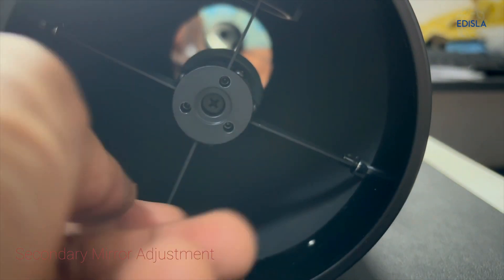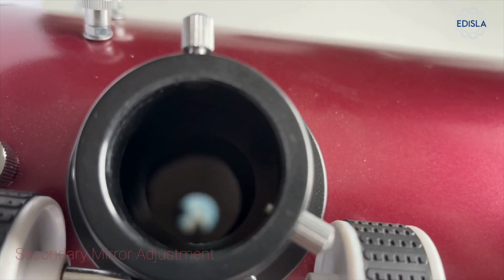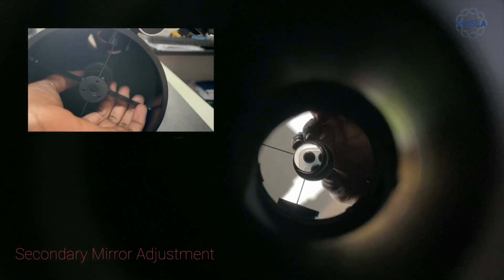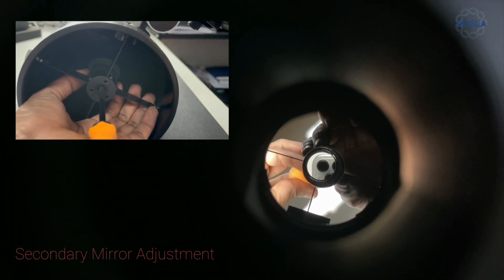Now hold the base of the secondary mirror gently with two fingers and turn the mirror to the desired position while looking through the telescope. Once you've achieved the correct alignment, lock the mirror screw in place while still supporting its base.